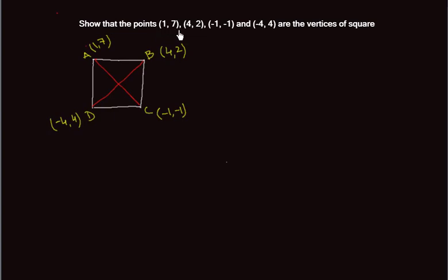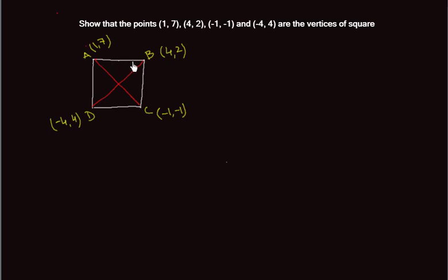Show that the points (1,7), (4,2), (-1,-1), and (-4,4) are the vertices of a square. Here I have drawn a square and named the vertices as A, B, C, D. The given vertices are: A is (1,7), B is (4,2), C is (-1,-1), and D is (-4,4).